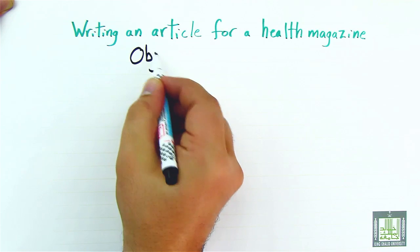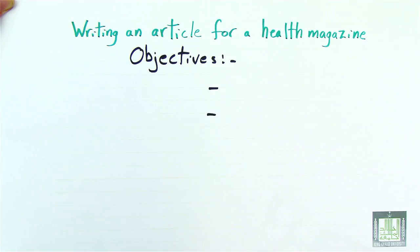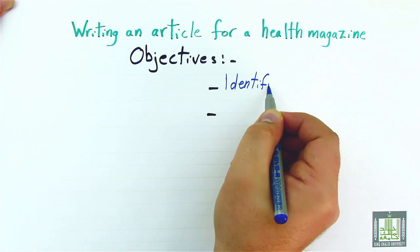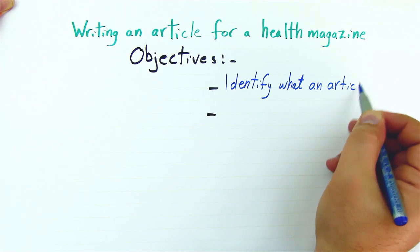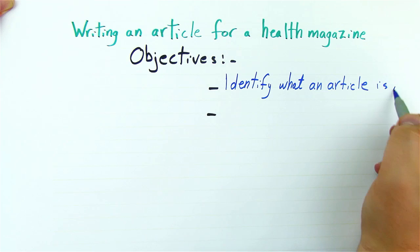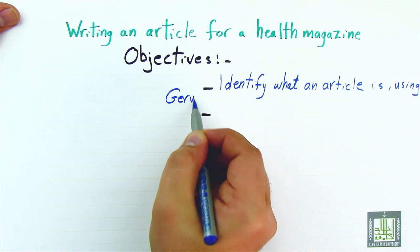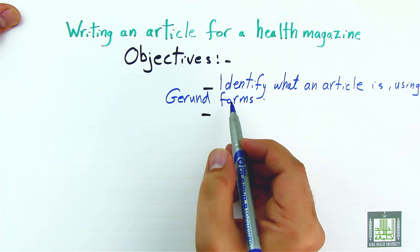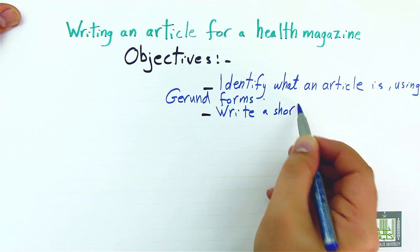And this means what the objectives are. Those objectives are: First, students will be able to identify what an article is using gerund forms. Second, students will be able to write a short article.